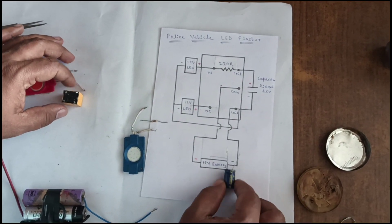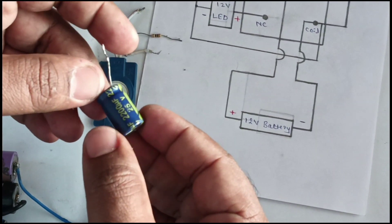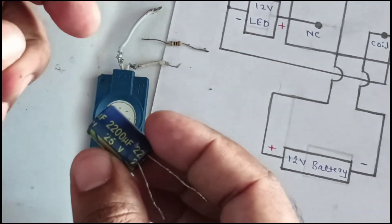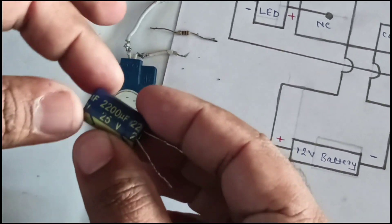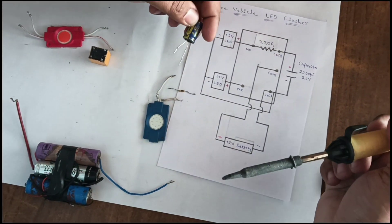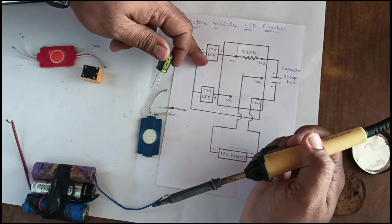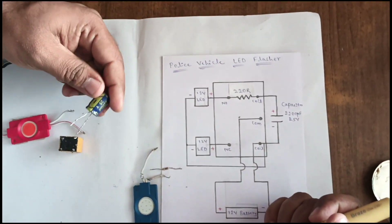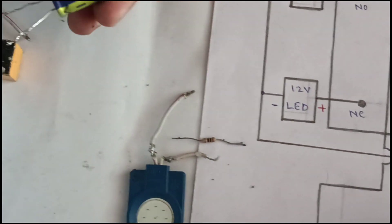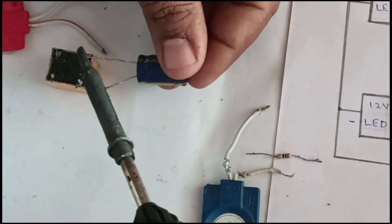Take the 2200 microfarad 25 volt capacitor. As shown in the diagram, connect the positive to one coil.